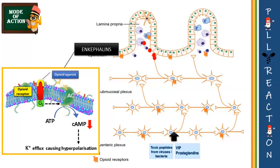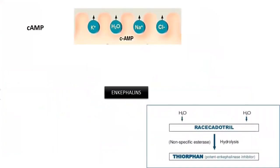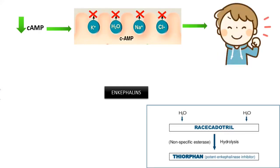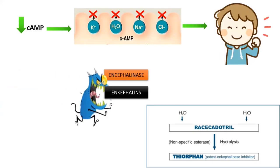Since delta receptors belong to the G-inhibitory GPCR family, any agonistic binding to such receptors signals a decrease in cyclic AMP production within the cytoplasm. Due to the lack of cyclic AMP production, this consequently reduces the secretion of water and electrolytes — such as potassium, sodium, and chloride — into the lumen.